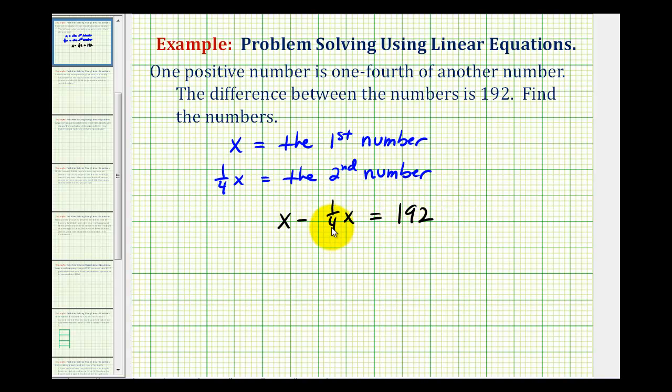Now we have two like terms that we need to combine before we solve for x. Remember we can think of this as one x. One x minus one-fourth x would of course be an x term.